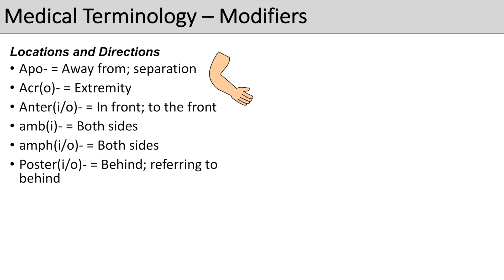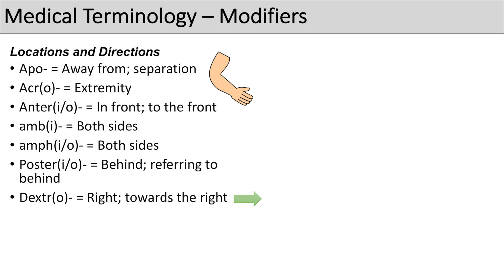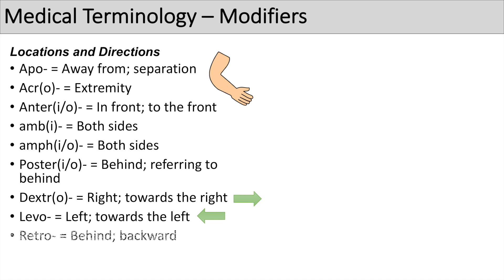The next prefix is 'posterior', which means behind or referring to behind — so we can think of the word posterior, which is pretty easy to remember. The next one is 'dextro', which means right or towards the right. You might hear of the condition dextrocardia, when your heart is pointing toward the right side. The next one is 'levo', which means left or towards the left. The next prefix is 'retro', which means behind or backward — you can think of retrospective.